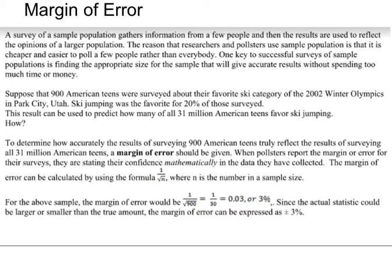Margin of error is basically a formula where you plug in numbers. If you're going to do a study, you want a certain number of people. If you only had two people, it's going to be very biased — it'll end up being like 50 percent. The more people you have, the smaller the margin of error, and what the margin of error tells you is how truthful the information is. It comes out as a percentage.